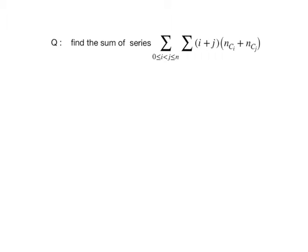The next problem is: find the sum of the series sigma sigma, where 0 ≤ i < j ≤ n, of (i + j) times nCi plus nCj.